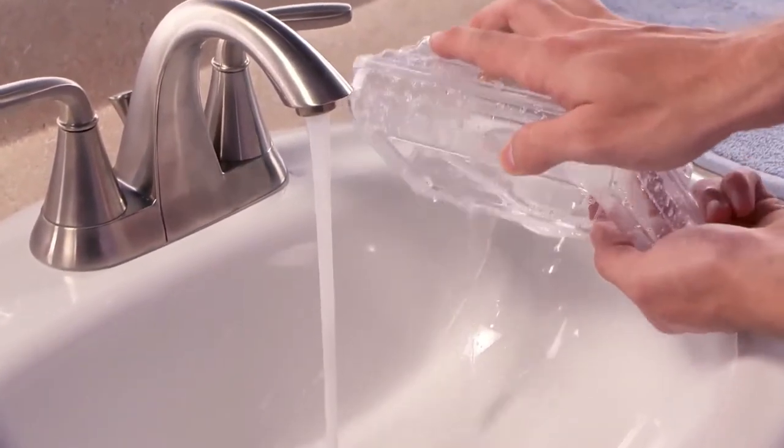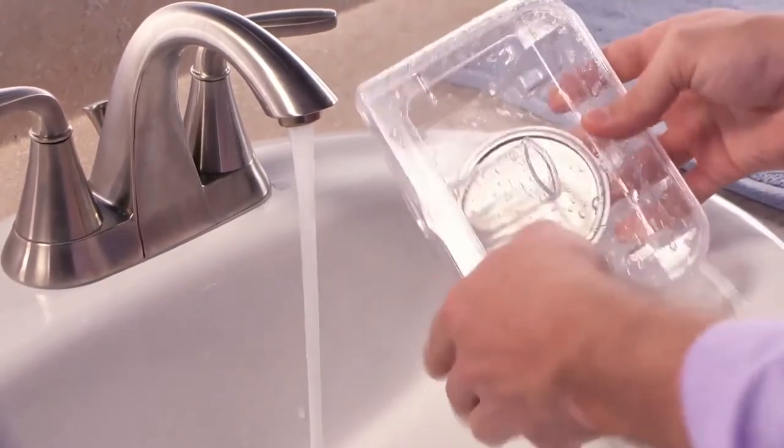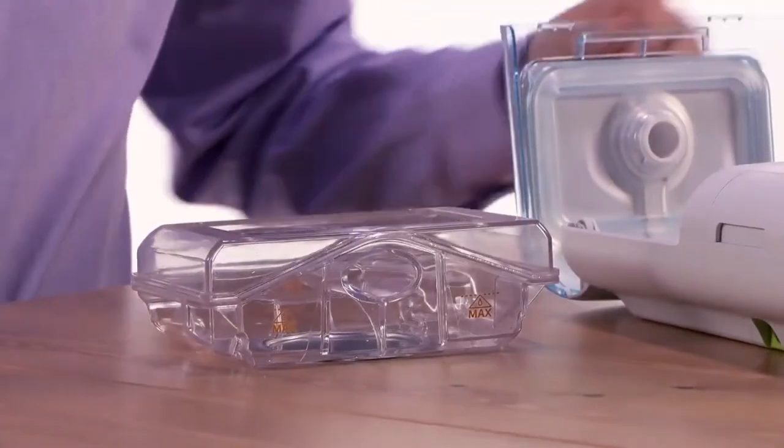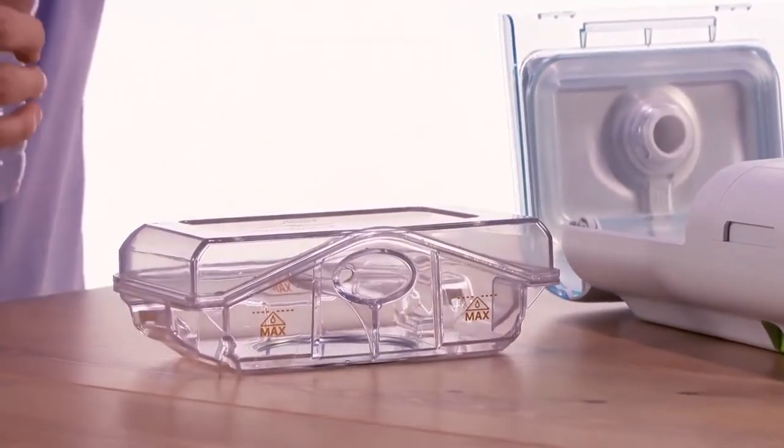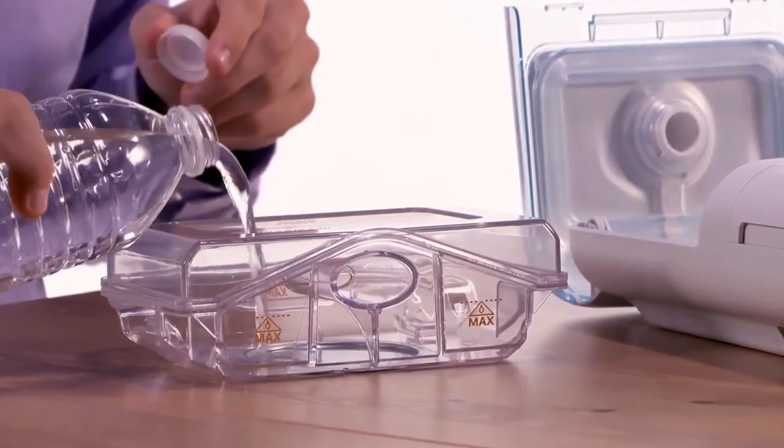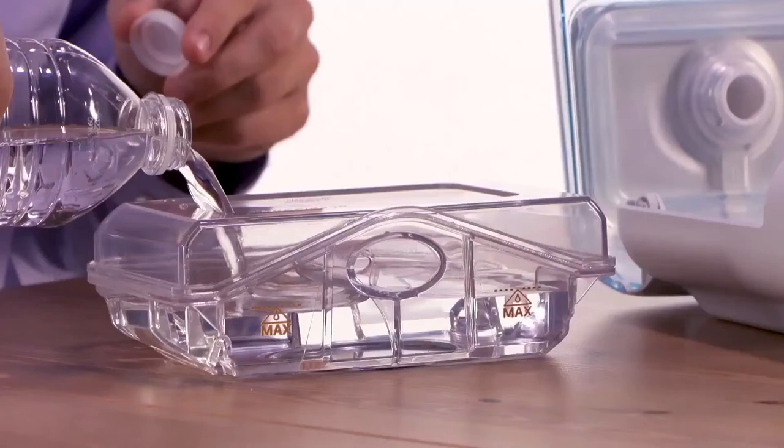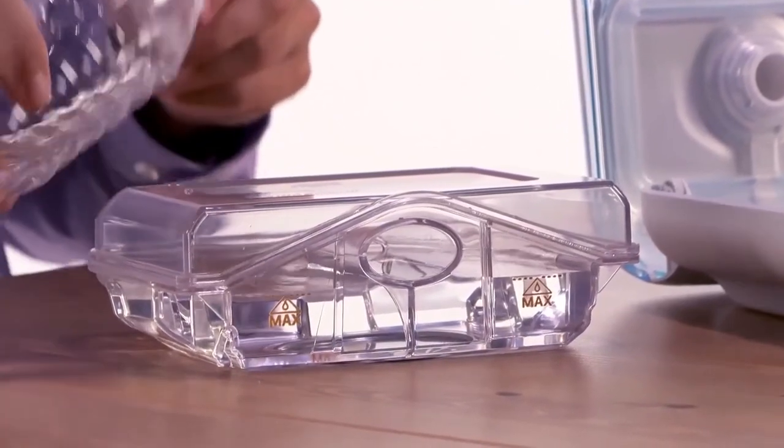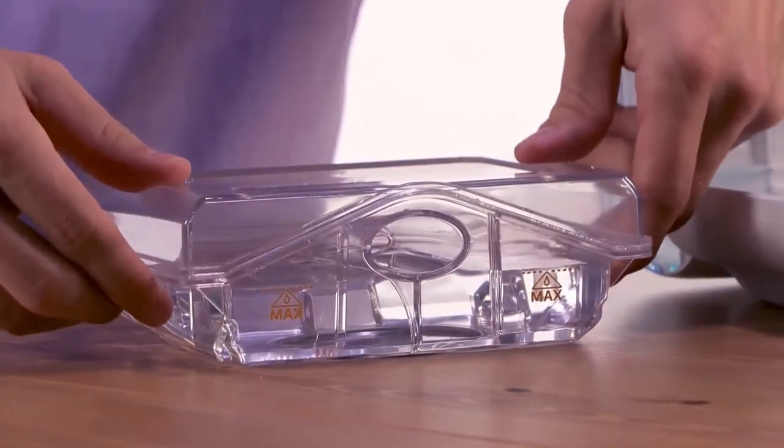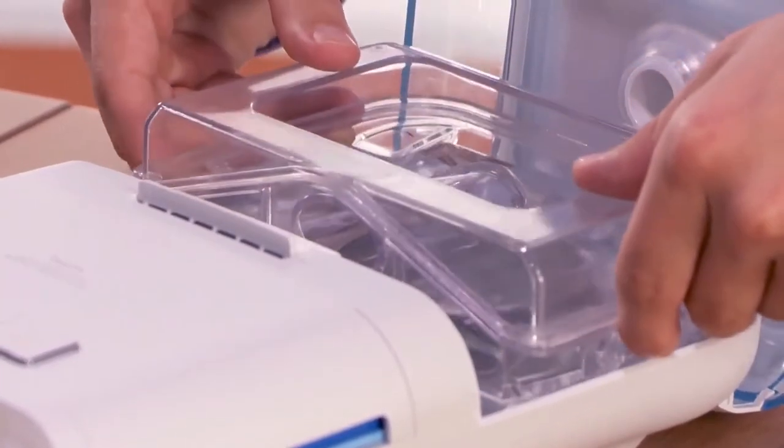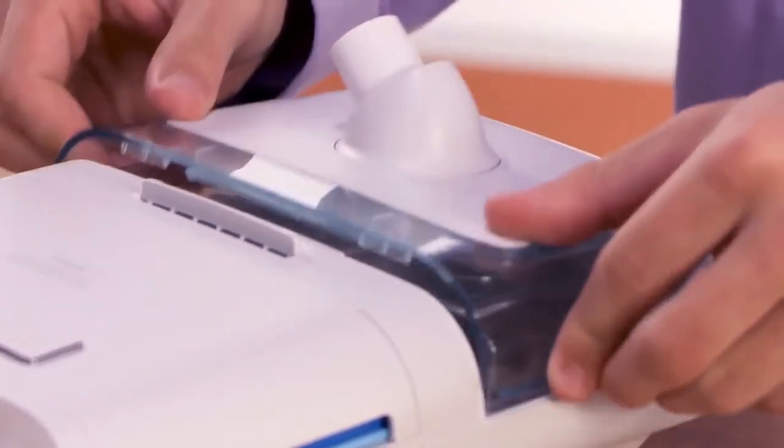To reduce damage to your device, always remove the tank before filling. Set the tank on a firm, flat surface. Fill the tank with distilled water no higher than the maximum fill line. Carefully place the water tank into the humidifier and close the humidifier lid until it snaps shut.